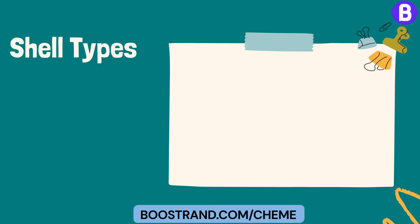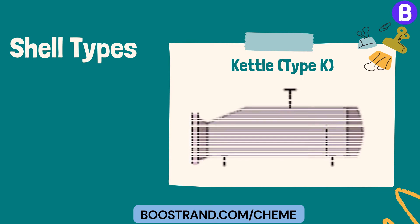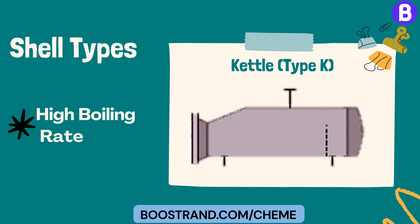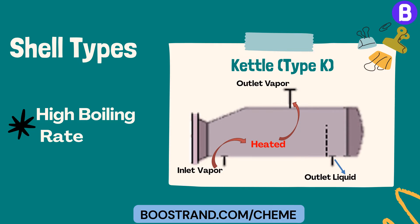Kettle, Type K: this is commonly used in services with high boiling rate, where the fluid to be vaporized enters from the shell bottom and is heated through the tube bundle. The resulting vapor then exits from the kettle top, and any non-vaporized liquid exits from the other side of the shell. Their most famous application is the kettle reboiler.